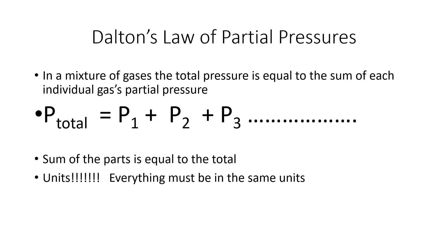The last gas law we're going to talk about is not related to the previous four. The previous four showed how different properties are related to each other. This last one just deals with pressure — it's the only gas law we're going to do any quantitative work with. This is Dalton's Law of Partial Pressures. In a mixture of gases, the total pressure is equal to the sum of each individual gas's partial pressure. So: total pressure equals pressure one plus pressure two plus pressure three, and so on for however many gases are present.